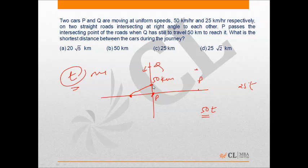Which means Q is 50 minus 25t kilometers away from P when they are at the minimum possible distance.